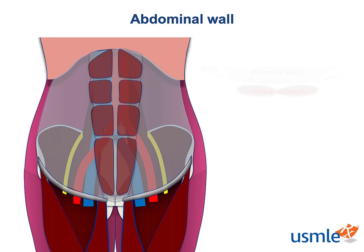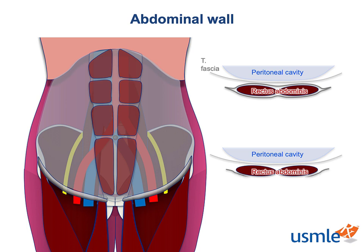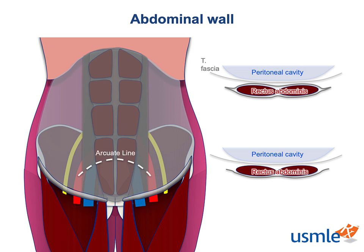Let's turn our attention to the rectus abdominis muscle. Superiorly, the rectus abdominis muscle is surrounded in front and back by a layer of connective tissue called the rectus sheath. Inferiorly, however, the rectus sheath only covers the rectus abdominis superficially rather than wrapping all the way around it. The cutoff point where the deep part of the rectus sheath ends is called the arcuate line, named for its arc shape.